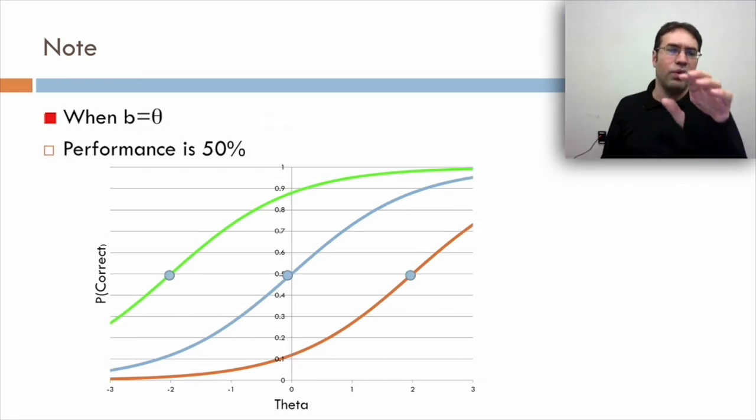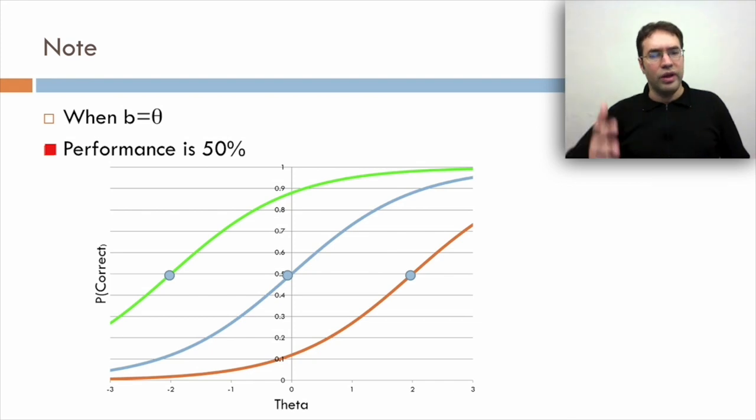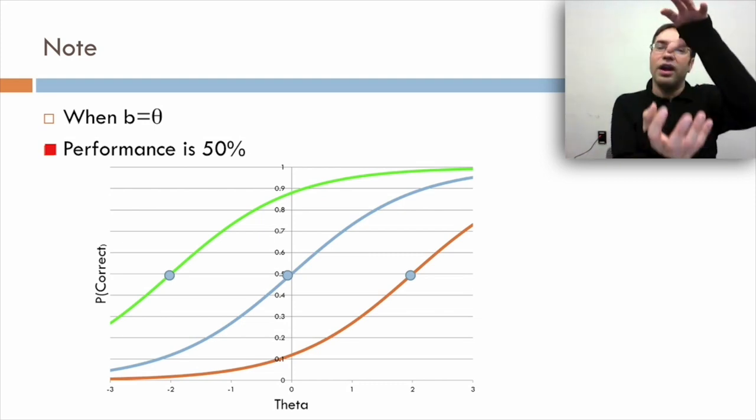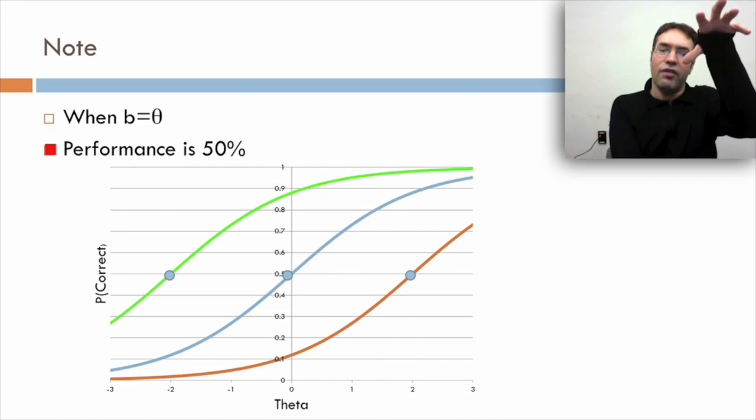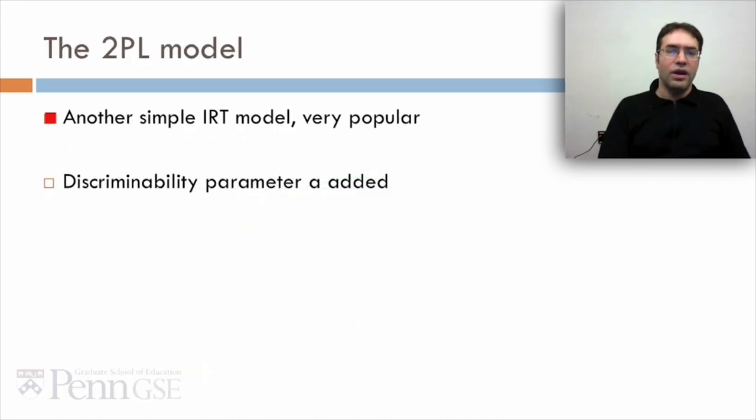Now you'll note that when b equals theta, performance is 50%, and this happens all through the spectrum. If you've got a really easy item and a really weak student, they're going to get performance of 50%. If you've got a really strong student and a really hard item, you'll get performance of 50%. This model accounts for the fact that difficulty of items and skill of students can be in balance.